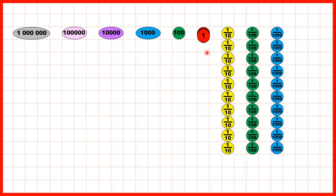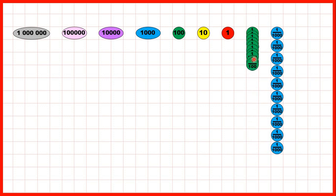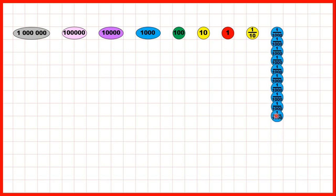Ten ones can be exchanged for one ten. If we have 10 tenths, we can exchange those counters because 10 tenths has the same value as one whole. Ten hundredths counters can be exchanged for one tenths counter, because ten hundredths have the same value as one tenth. And finally, ten thousandths counters can be exchanged for one hundredth counter.